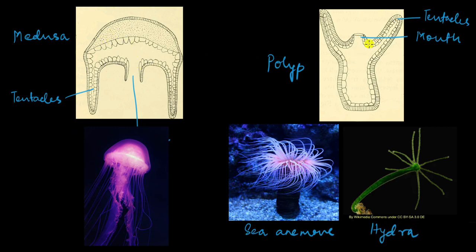Both medusa and polyp forms have a central gastrovascular cavity. You see this cavity over here inside the body wall—this is the gastrovascular cavity.